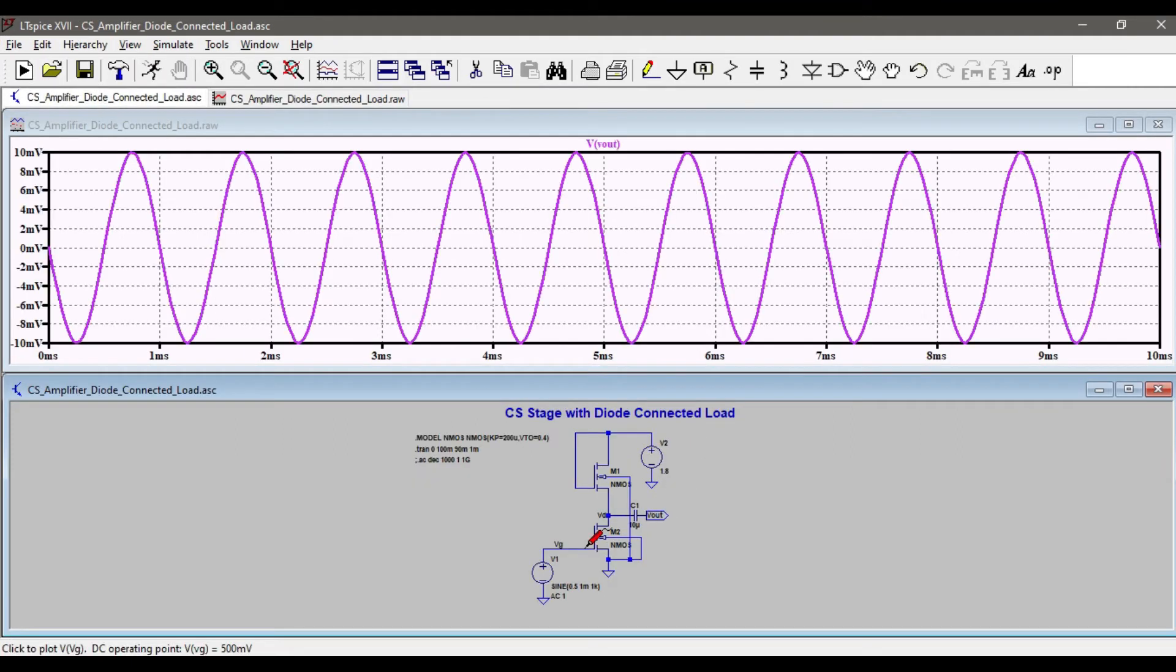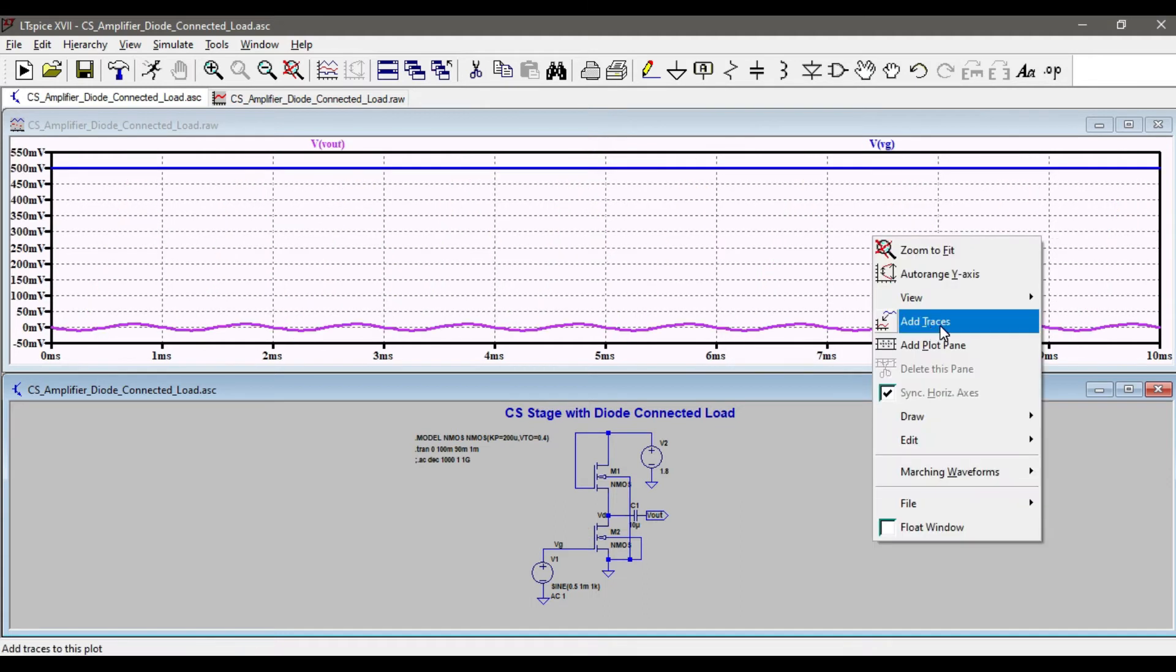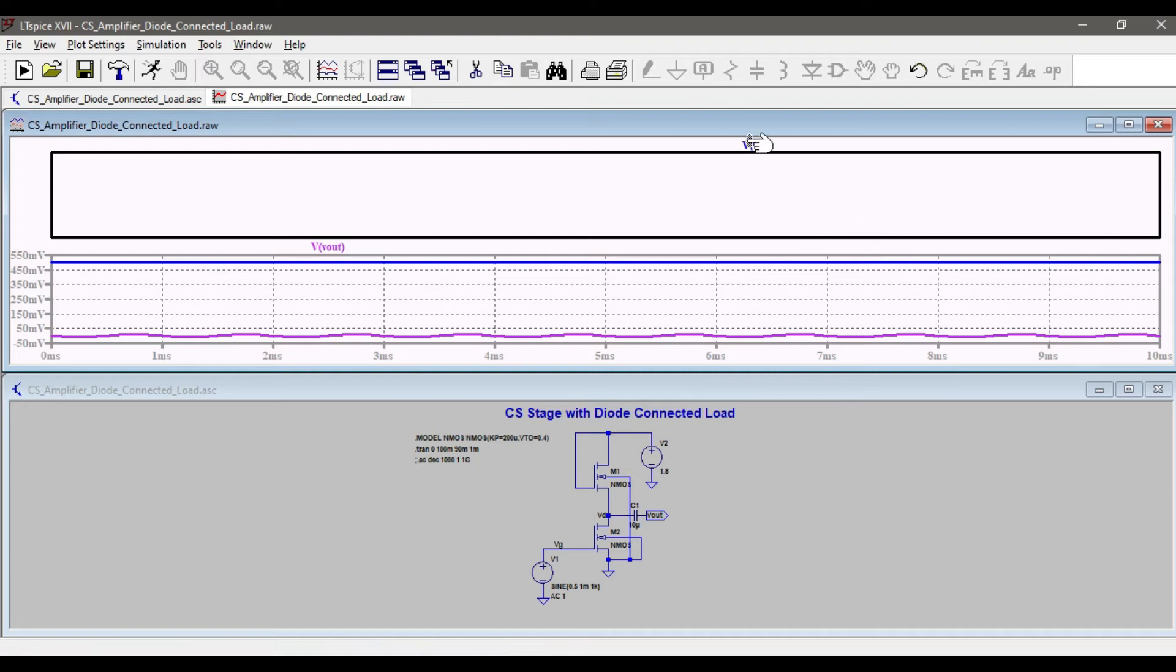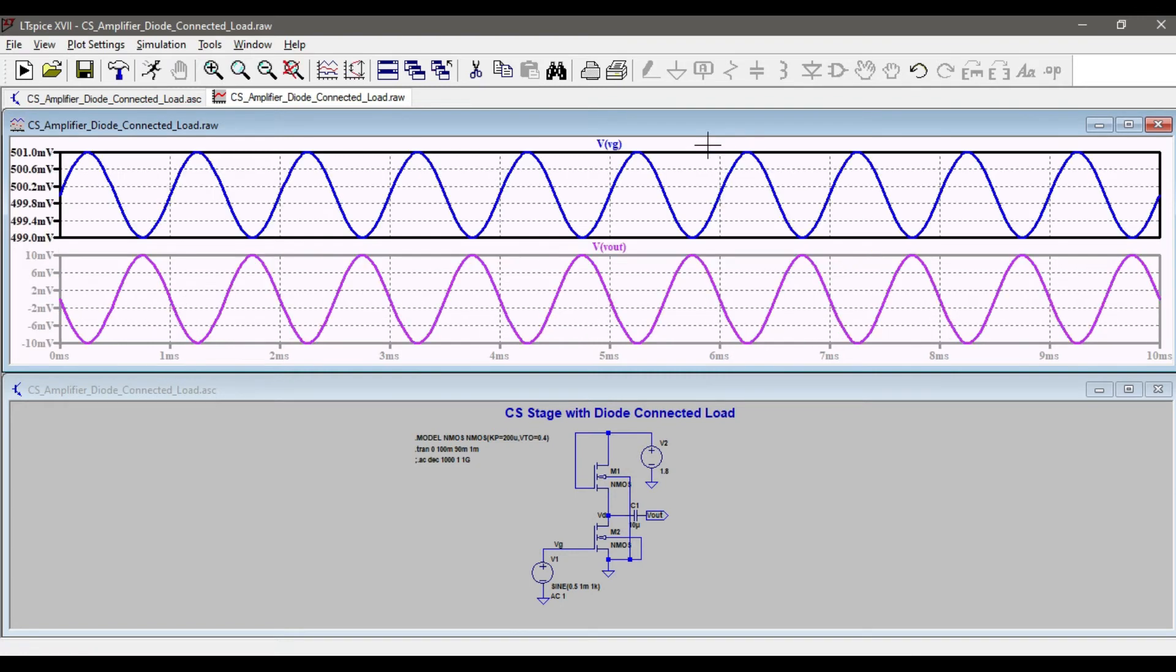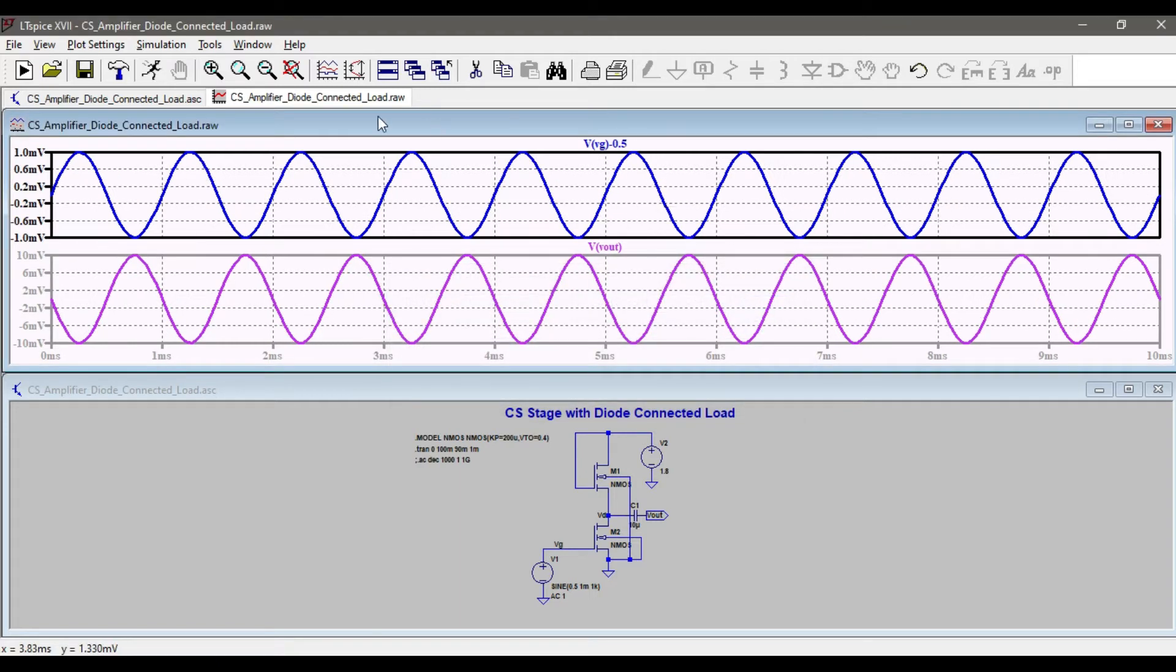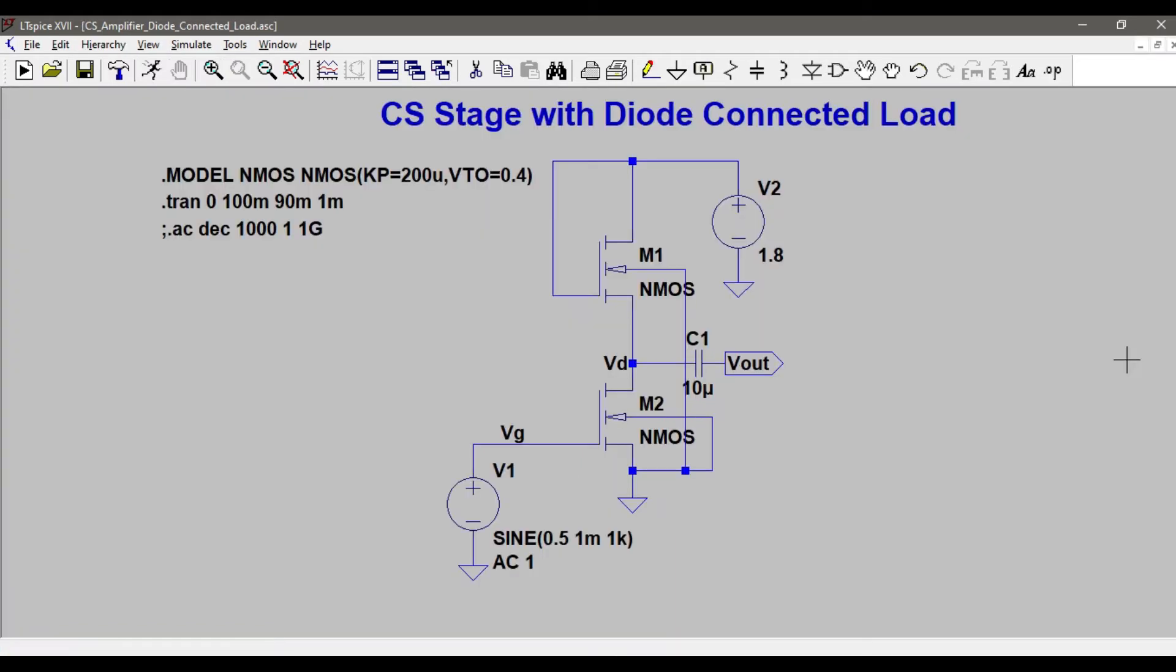And I'll click on the output and also click on the input value. Let me add another plot plane and move this over here, and I'll subtract 0.5 from that. Yeah, so this is 2 millivolt peak to peak and 20 millivolt peak to peak. I have a 10 volt per volt gain.